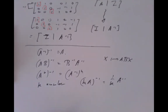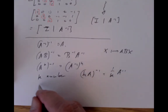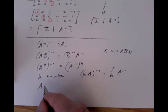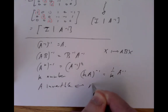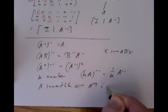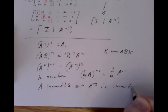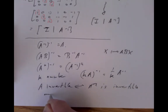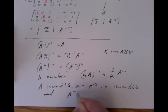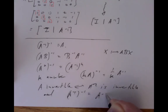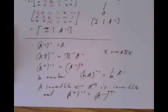A less obvious fact: A is invertible if and only if A transpose is invertible. And furthermore, (A transpose)⁻¹ equals (A⁻¹) transpose. These are not obvious at all and wouldn't be expected to just fall out immediately.